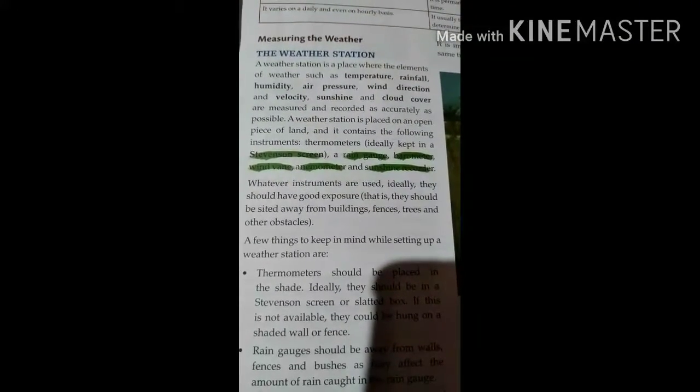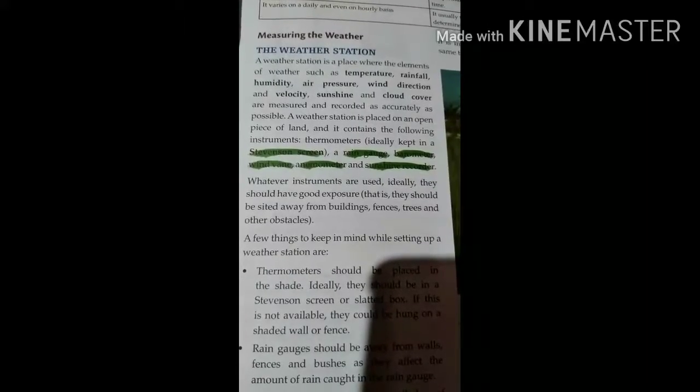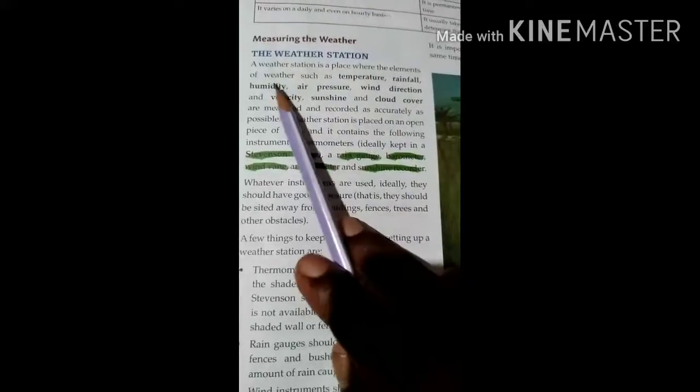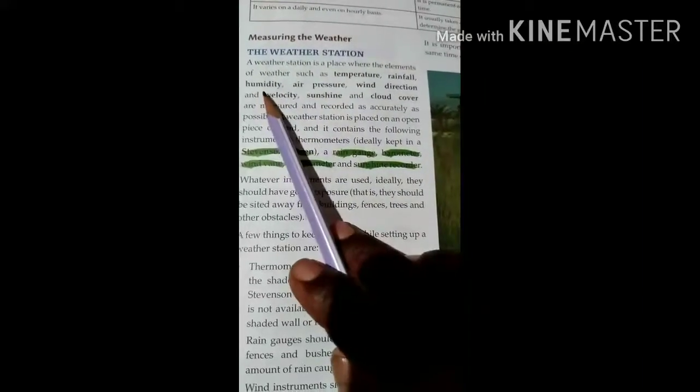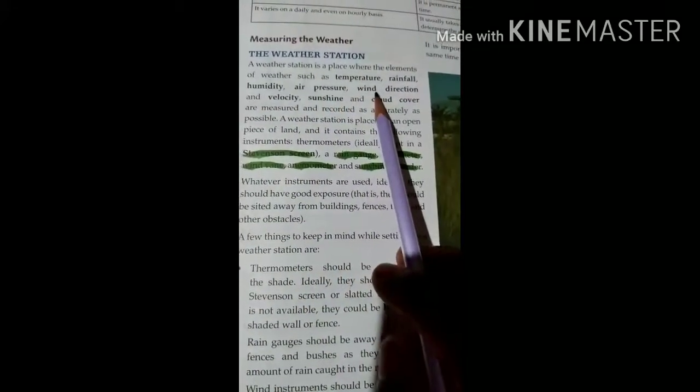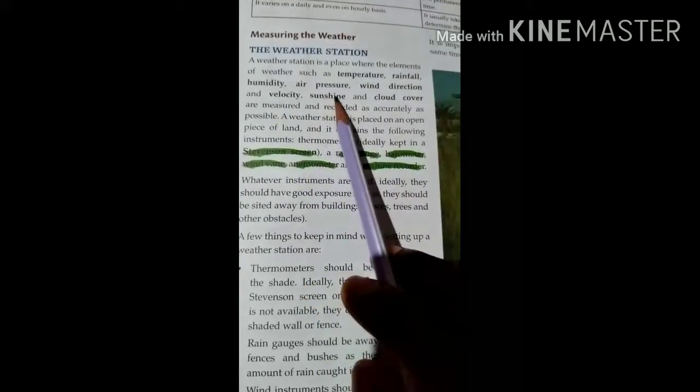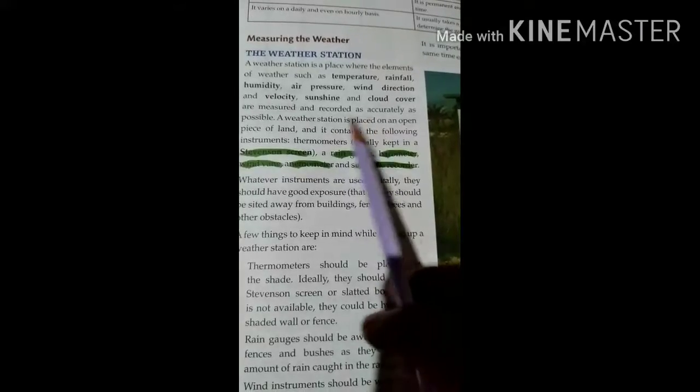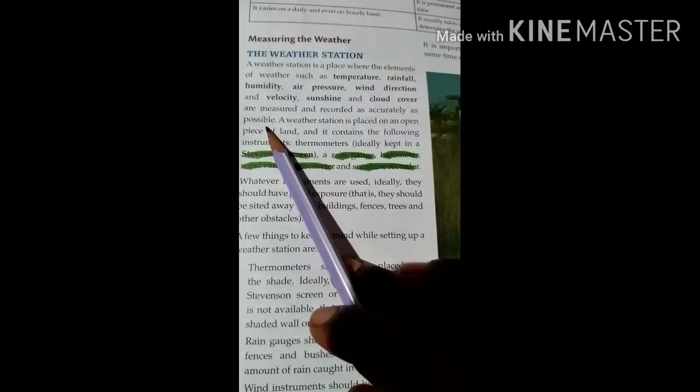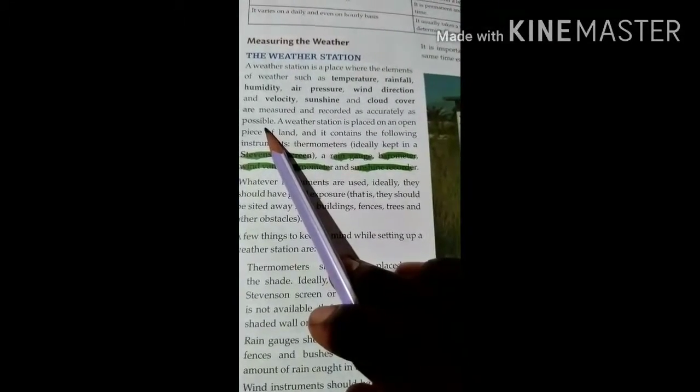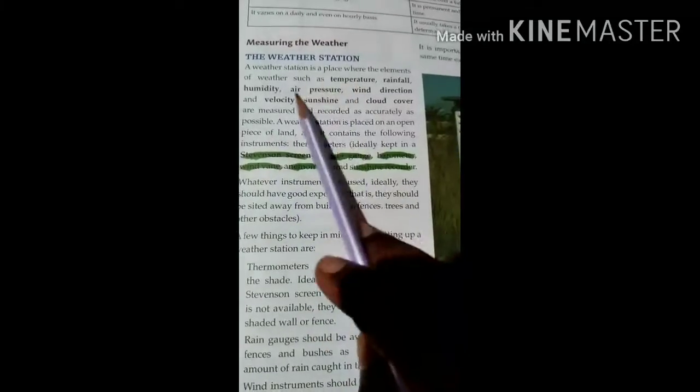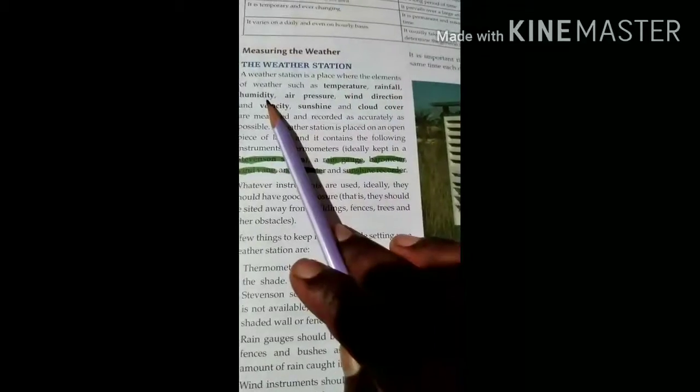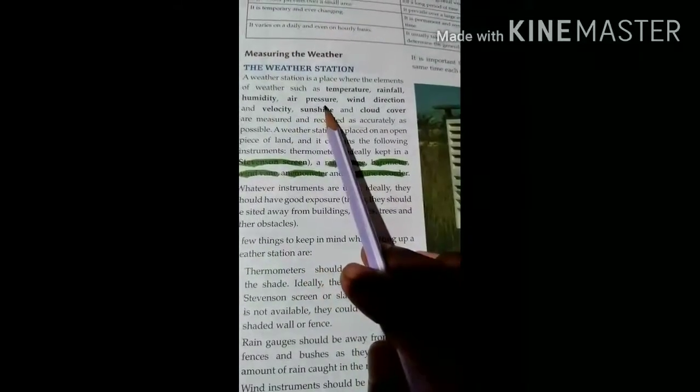Now measuring the weather. The weather station. A weather station is a place where the elements of weather such as temperature, rainfall, humidity, air pressure, wind direction and velocity, sunshine and cloud cover are measured and recorded as accurately as possible. In the weather station we see that weather conditions are measured. It may be temperature, it may be rainfall, humidity, air pressure and so on.